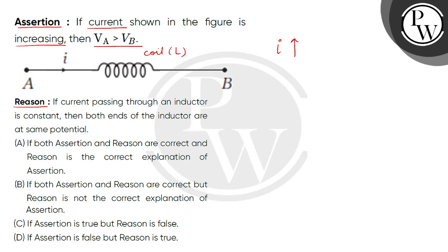So if current increases, then the induced EMF will get the magnitude of L di/dt. Now when the current increases, we get EMF. How will it get in increasing condition? It means that the A point potential will be more than the potential of B point. So we can say that assertion